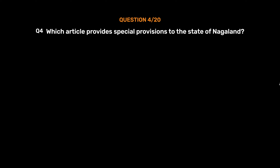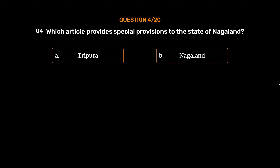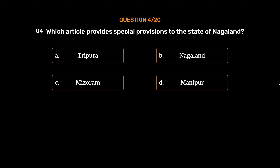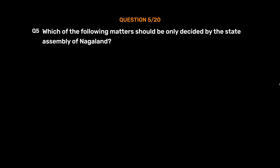Question No. 4: Which article provides special provisions to the state of Nagaland? Option A: Tripura. Option B: Nagaland. Option C: Mizoram. Option D: Manipur. The correct answer is Option B: Nagaland.